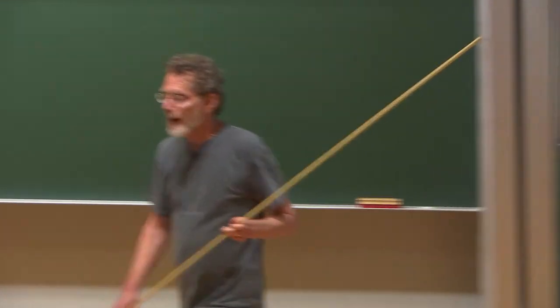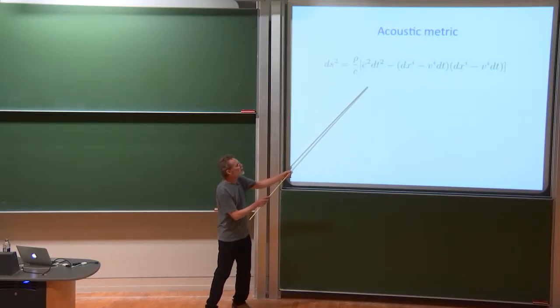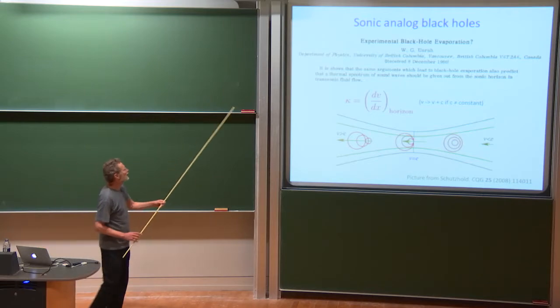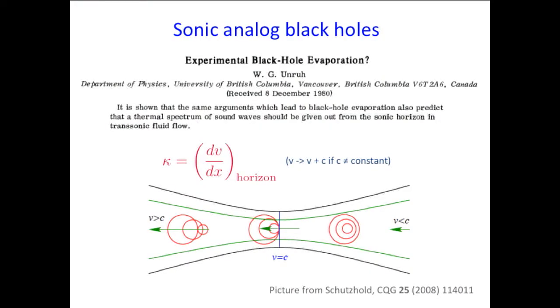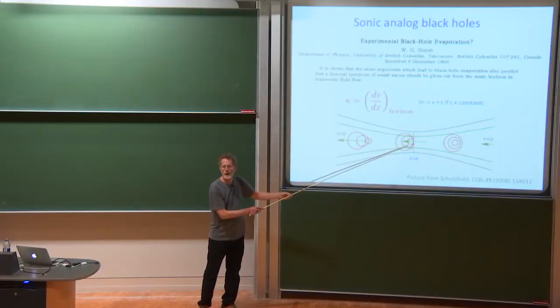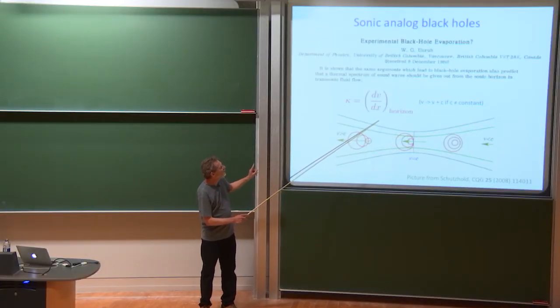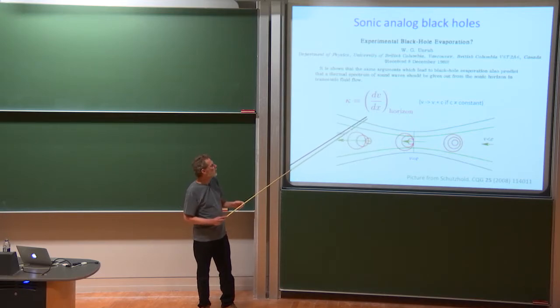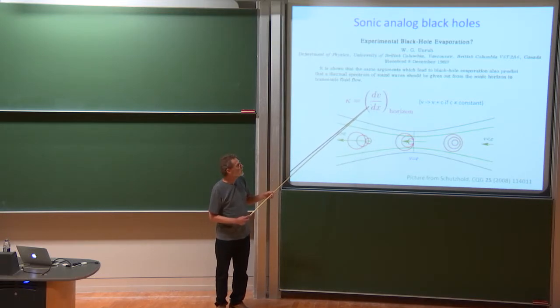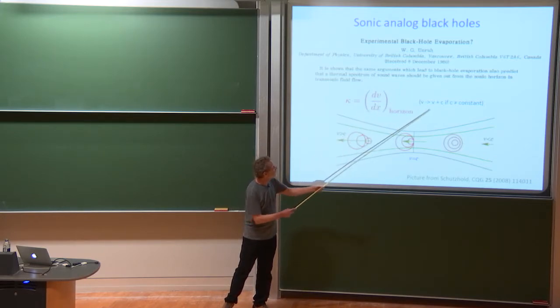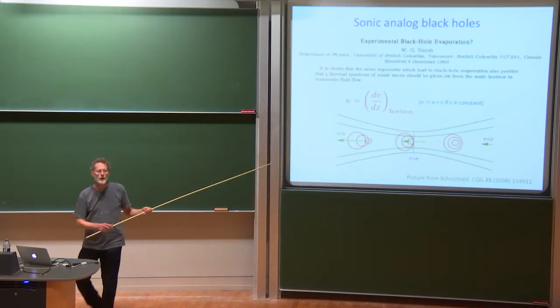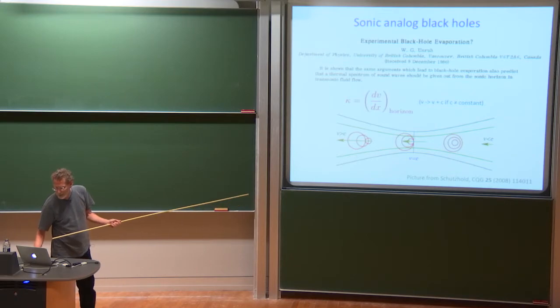So then we could look at the horizon in this metric and the surface gravity in this metric. And it turns out to be given, the surface gravity is just the derivative. It's the rate of change of the velocity evaluated at the horizon. Actually, that's true. Bill was assuming a kind of like water, an incompressible fluid so that the speed of sound was just constant in it. But if the speed of sound is not constant, then actually the correct formula, you replace V by V plus the speed of sound. And that's actually the regime, the situation in Bose-Einstein condensates, as you'll hear about.